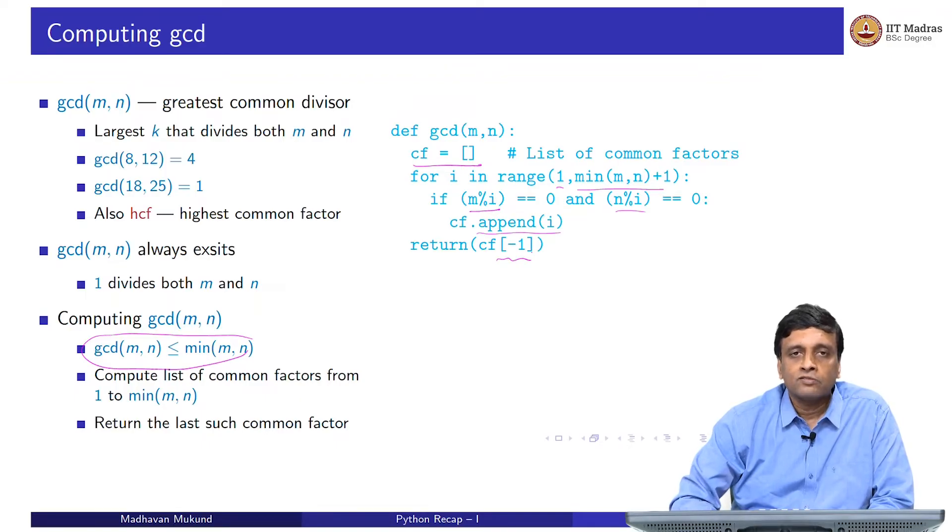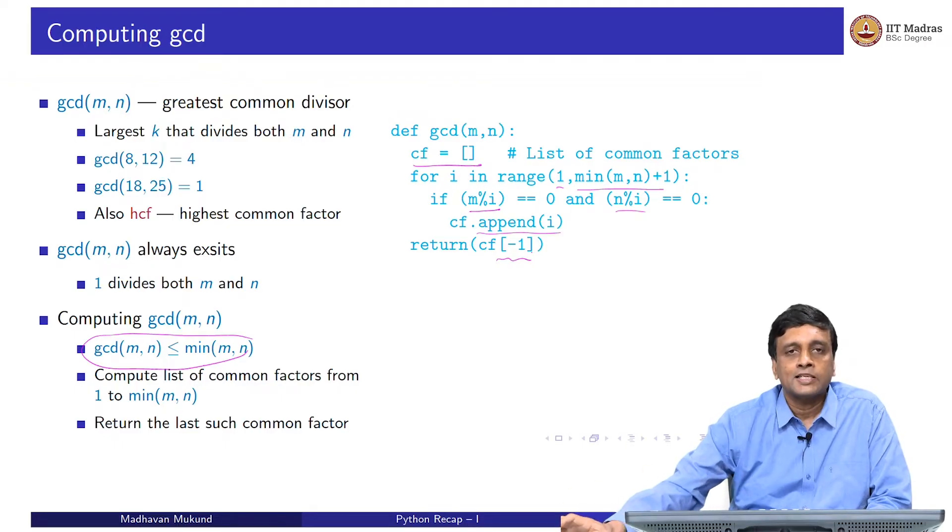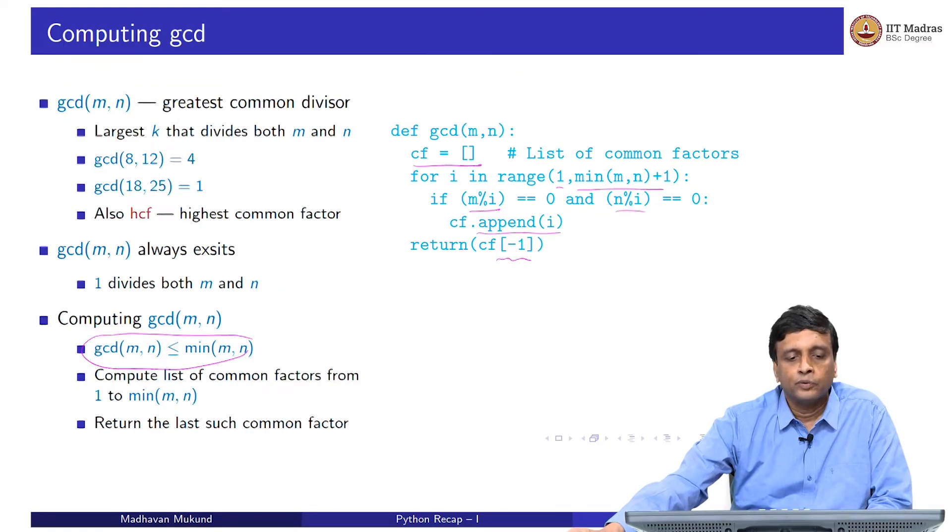Finally, at the end, you are interested in the biggest one of these. These are being added in sequence from 1 in increasing order. The largest one will be the last one and that will be at index minus 1.